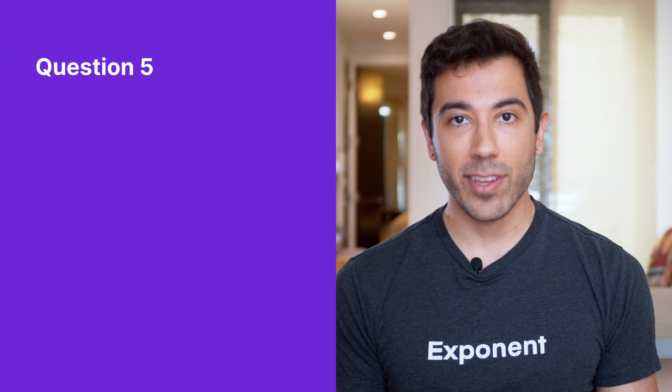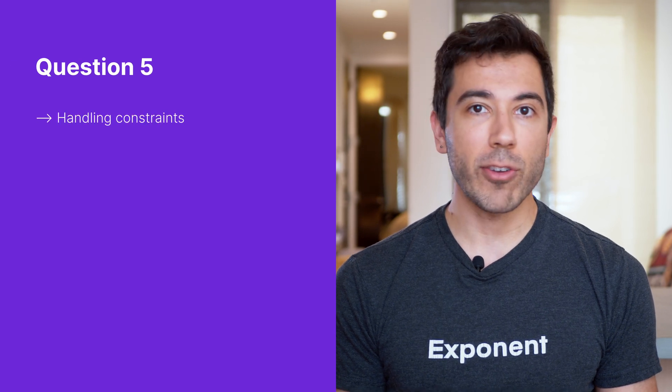Number five: handling constraints questions. These might look something like: tell me about a time when you had to work on a tight deadline, or tell me about a time when you had to decide between a code refactor or shipping something sooner. As a software engineer, you're always battling against different constraints, and your job is to prioritize the company and project objectives while balancing those constraints.